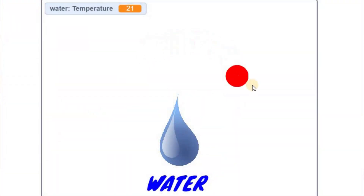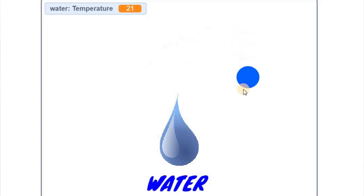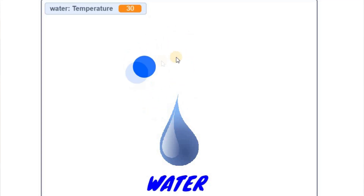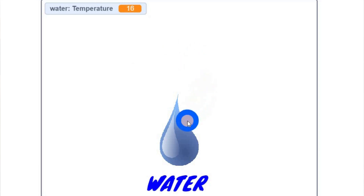Hi everyone! Today we're gonna create a natural science Scratch project to study the changes of state in matter. As you can see there is a circle — it can be red or blue. If the red circle touches the object the temperature of the object increases, and if the blue circle touches it the temperature decreases. In addition, the state of the object changes according to the temperature.